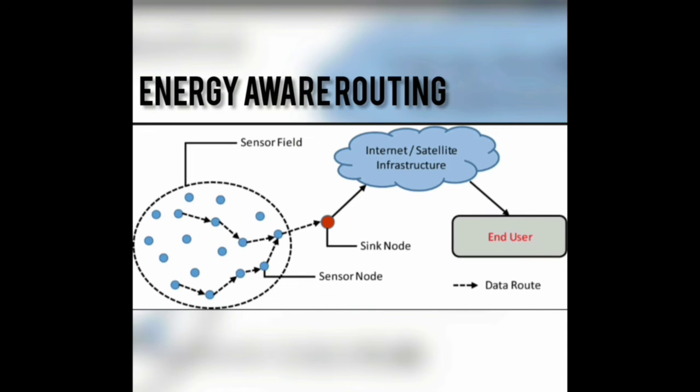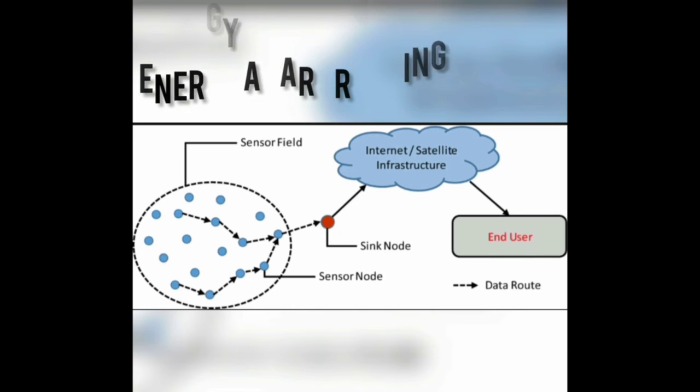Energy-aware routing. It is the efficient technique used in wireless sensor networks for routing the data from the source to destination. And it is the process of utilizing the minimum energy to transmit the data between the source and destination.